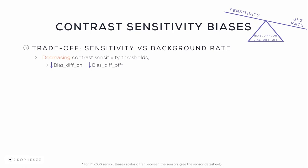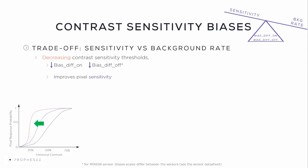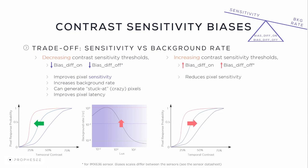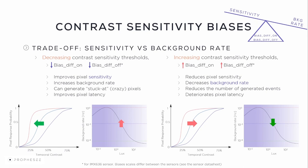If you use another sensor, check the datasheet. Decreasing contrast sensitivity thresholds improves pixel sensitivity, but also increases the background rate — the number of events generated under constant static illumination — and can generate stuck-on or crazy pixels that generate events much more often than others. However, it will improve pixel latency. Increasing contrast sensitivity thresholds reduces overall pixel sensitivity, decreases the background rate, reduces generated events, but deteriorates pixel latency.